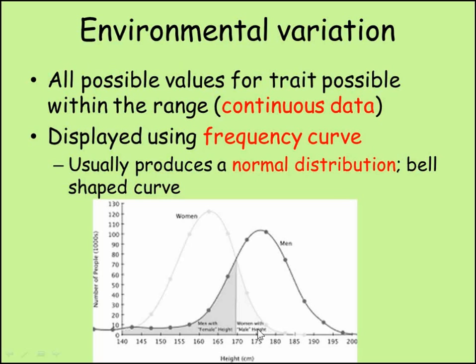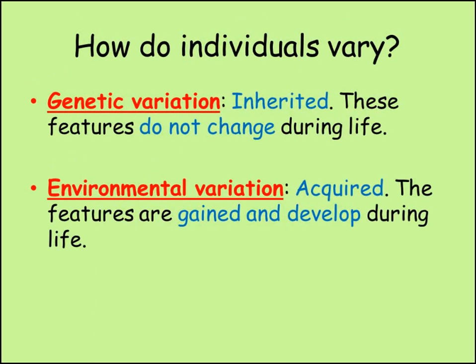The most common height for men is around 175cm tall. We would use a line graph to show this type of data, as it is possible to be any height within the range shown. Height is a continuous variable. Other examples of variation in humans caused by environmental factors include weight and intelligence.